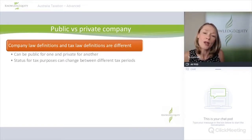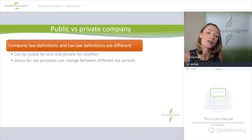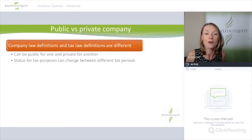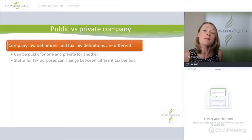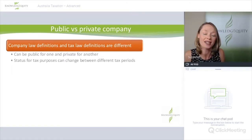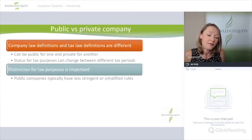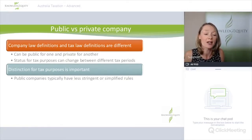An important distinction when looking at the taxation of companies is between a public and a private company. There are corporations law definitions of private and public company, but they differ from the tax law definitions. So be aware that if you're a private company for corporations law purposes, you might be a public company for tax law purposes and vice versa. Also a company's status for tax purposes can change between different tax periods. Public companies typically have less stringent or simplified rules.